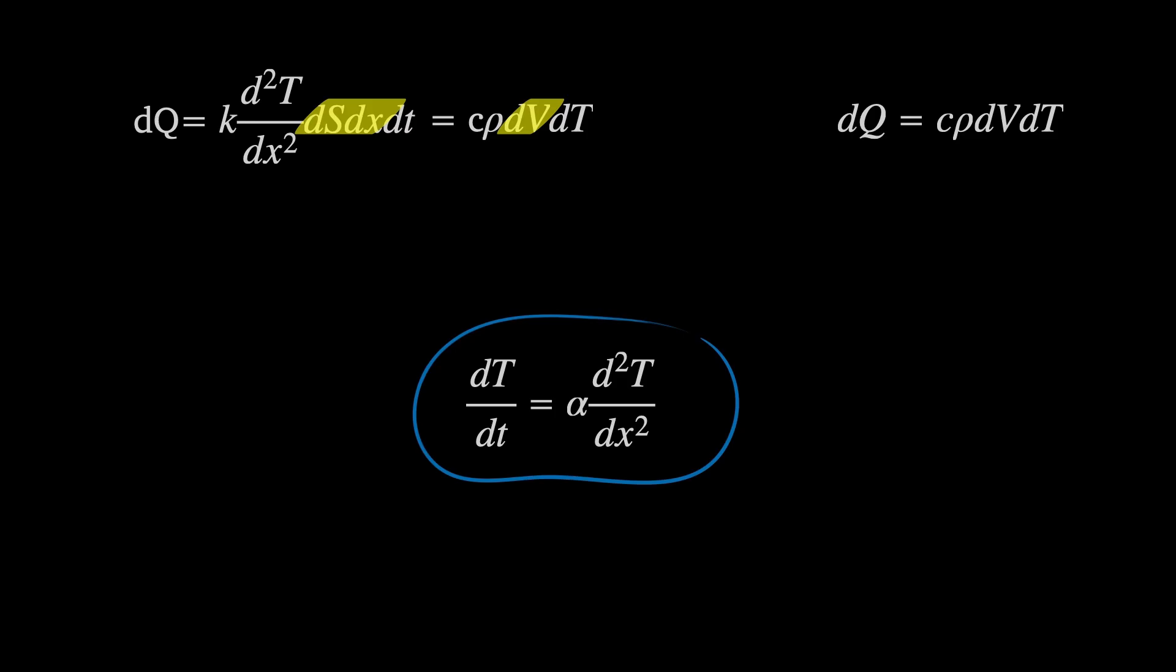This is where the specific heat capacity comes in. One thing to notice is that we have dS dx on the left hand side and dV on the right, but these are the same thing and so they also cancel. If we divide both sides by dt, we're left with d temperature by dt is a constant α, and I've simplified things by combining the previous constants, times the second derivative of temperature with respect to x. This is now what we call the heat equation.